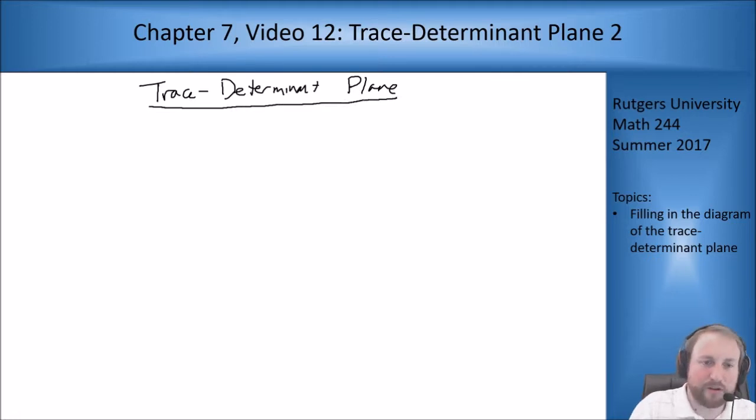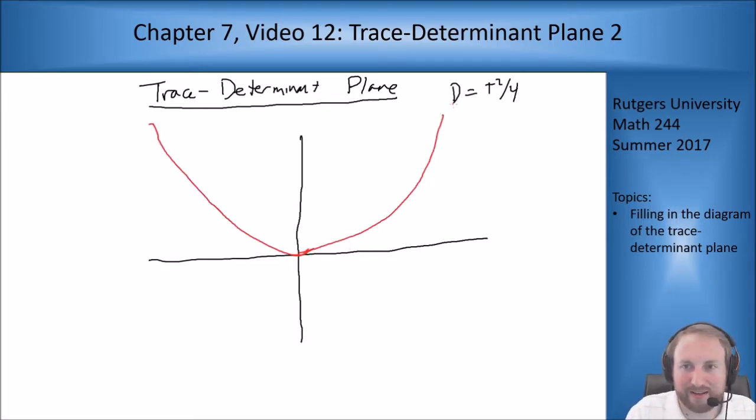Let's go ahead and just start drawing that out. Like I mentioned in the last video, the idea is this curve d equals t squared over 4 is going to be important because along that curve our discriminant is 0. So let's go ahead and draw some axes and put that curve on it. The idea is I want to put all of my different types of equilibrium points on this picture based on where they would fall, this being the trace, this being the determinant of my matrix, how this determines things.